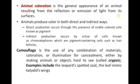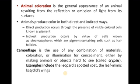Animal colouration is the general appearance of an organism resulting from the reflection or emission of light from its surfaces. Animals produce colour in both direct and indirect ways. The direct production occurs through the presence of visible coloured cells known as chromatophores, which are pigmented cells.